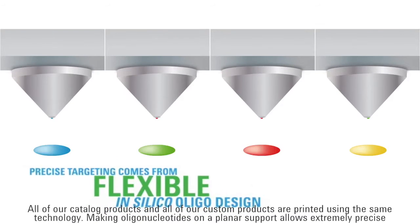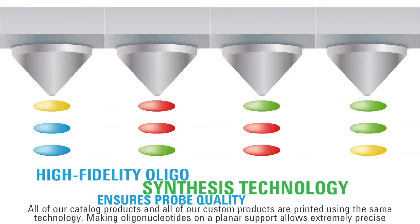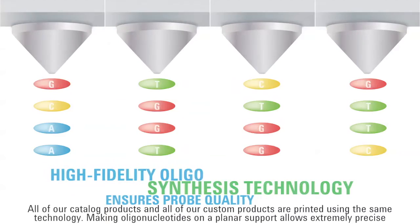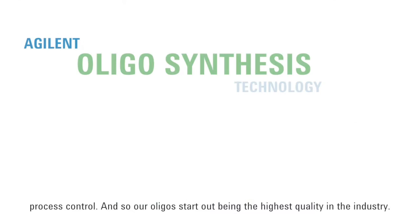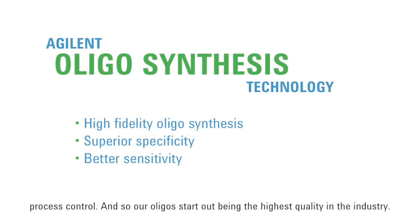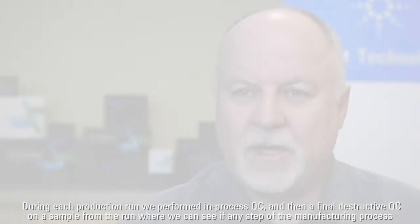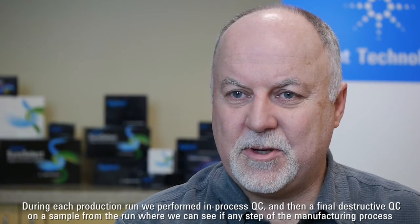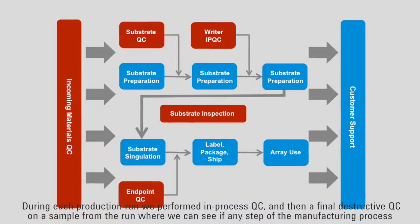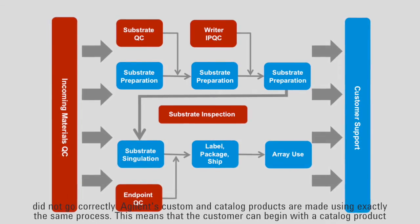All of our catalog products and all of our custom products are printed using the same technology. Making oligonucleotides on a planar support allows extremely precise process control, so our oligos start out as being the highest quality in the industry. During each production run we perform in-process QC and then a final destructive QC on a sample from the run, where we can see if any step of the manufacturing process did not go correctly.